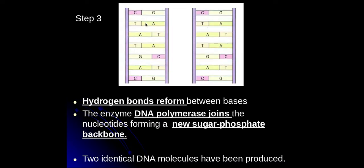Hydrogen bonds will then reform between these bases and the enzyme DNA polymerase will come and join the sugar phosphate backbone, which is this part here. DNA polymerase helps to form the three to five phosphodiester bonds that create the new sugar phosphate backbone.